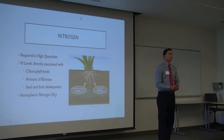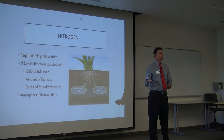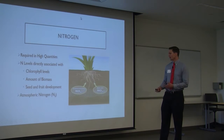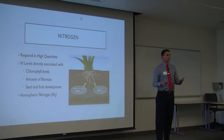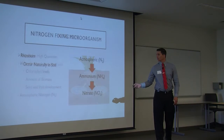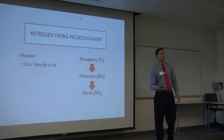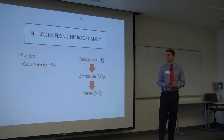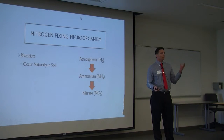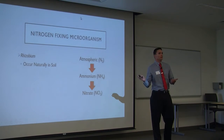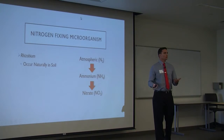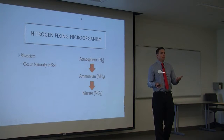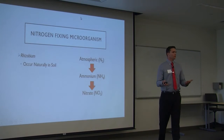Atmospheric nitrogen, N2, is unavailable for plant use. So they need a different form of nitrogen, which is ammonium or nitrate, to directly absorb. Rhizobium is a nitrogen-fixing microorganism. It is found naturally in soils, and it converts atmospheric nitrogen into ammonium and nitrate. Plants form an association with these rhizobium, and it helps the plants absorb nitrogen.